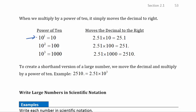Because our number system is base 10, multiplying by a power of 10 simply moves the decimal place to the right. Take 2.51: multiplying by 10 to the first power moves the decimal one place to the right, giving 25.1. Multiplying by 10 squared moves it two places, giving 251. Multiplying by 10 to the third moves it three places, giving 2510.